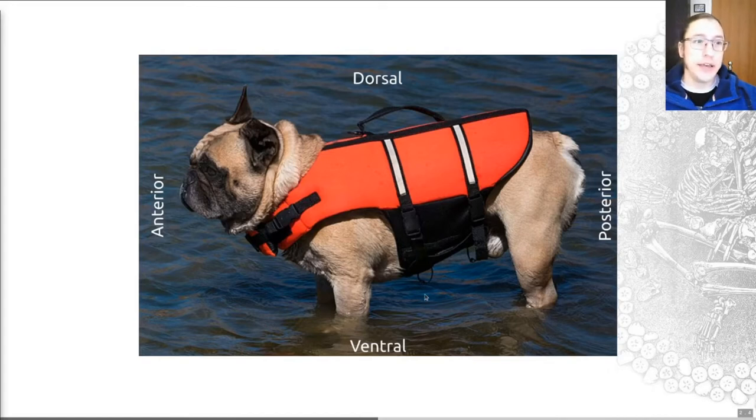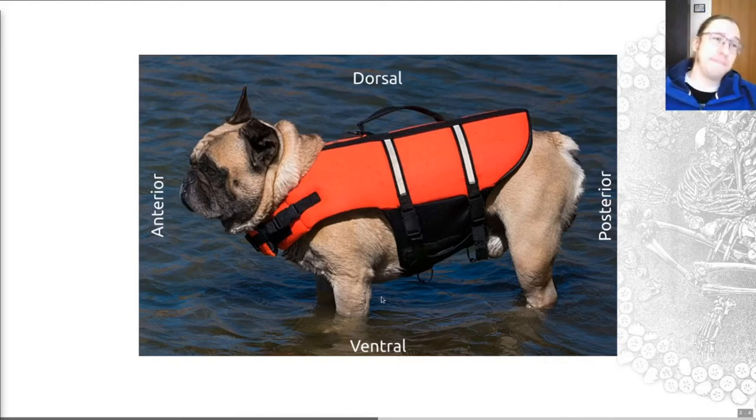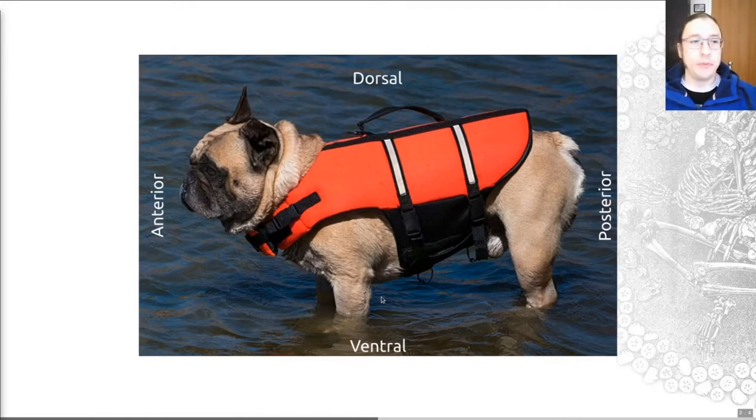The dorsal surface is where the handle for this life jacket is situated, and the ventral surface is its belly just here. Someone on Twitter informed me that for dogs, people tend to talk about caudal and rostral rather than anterior and posterior, but there you go. So if that helps you remember those directions, think about the French bulldog wearing a life jacket.